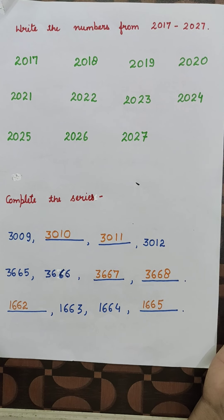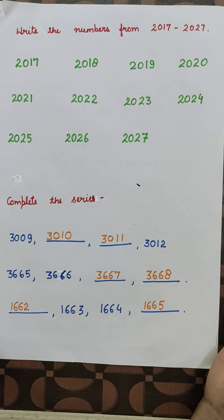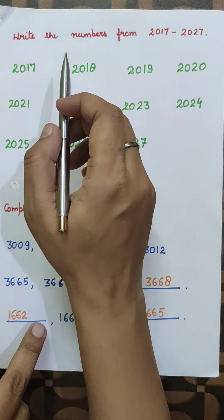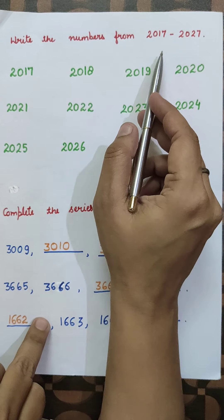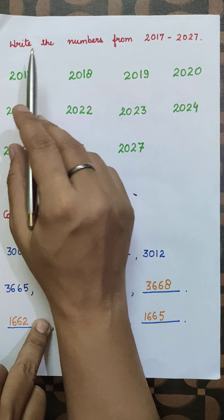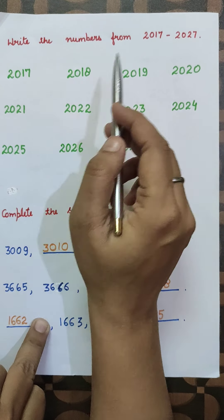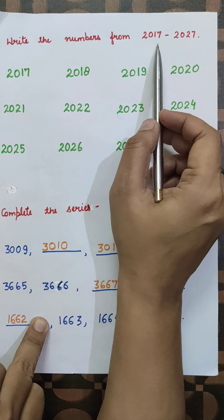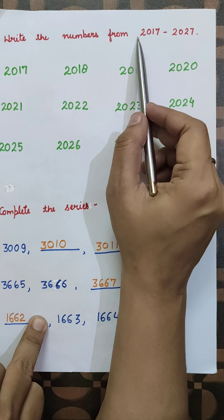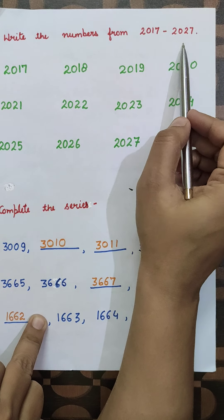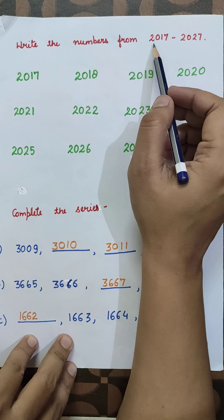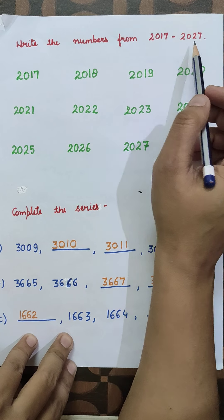Good morning, dear students. Now we are coming to the next question. The question is: write the numbers from 2017 to 2027. If the question says to write the numbers between two given numbers, for example from 2017 to 2027, we need to write all numbers that come in between.